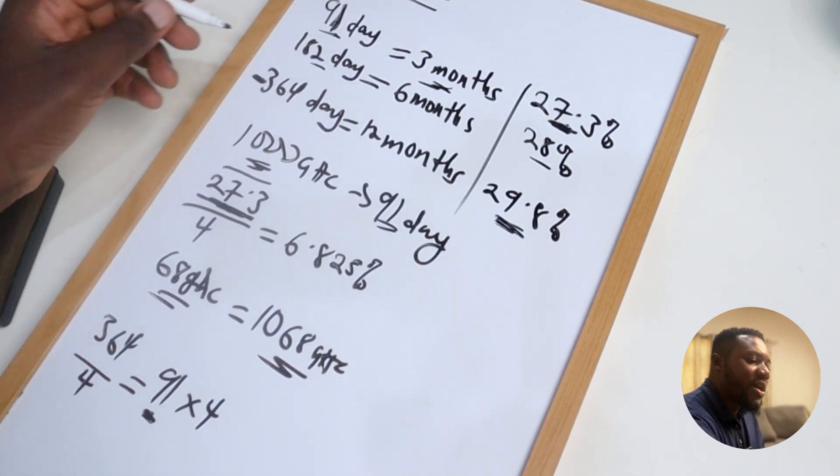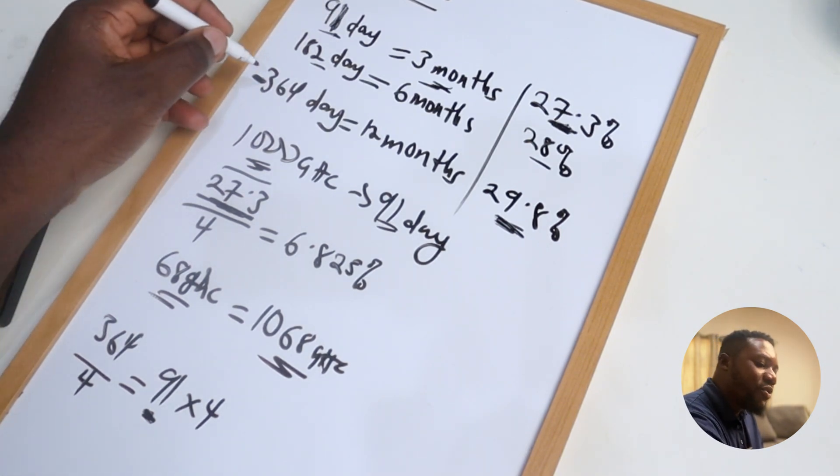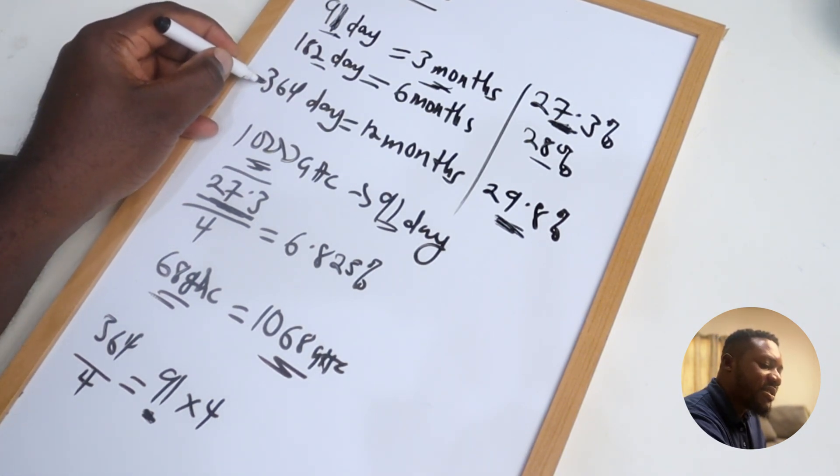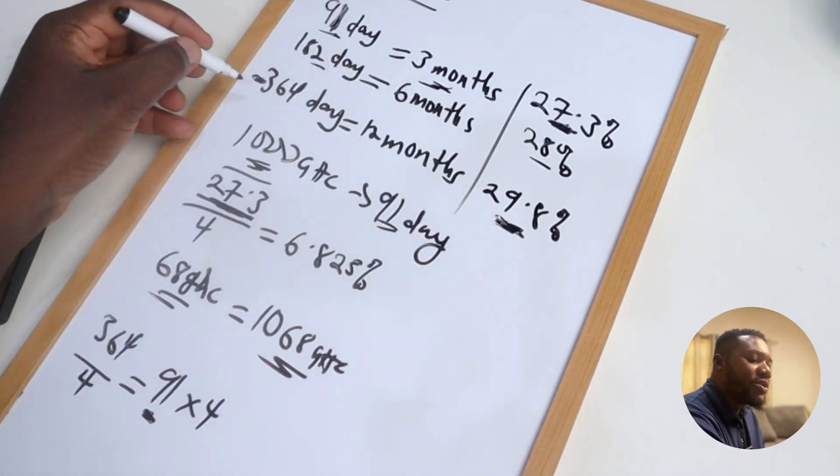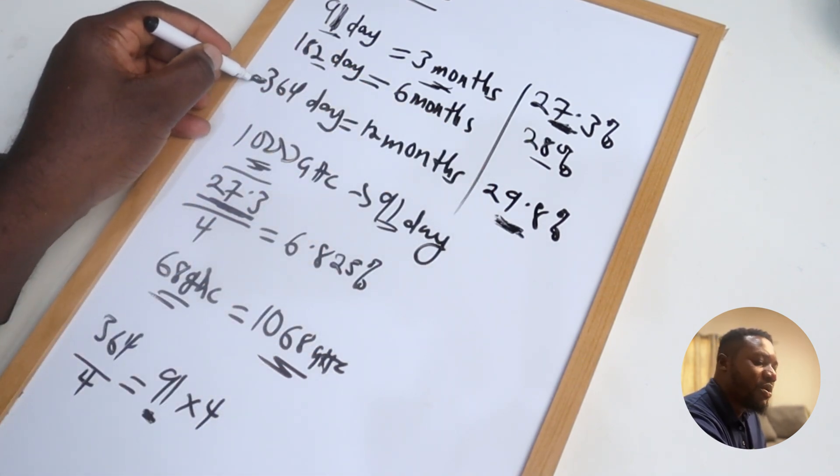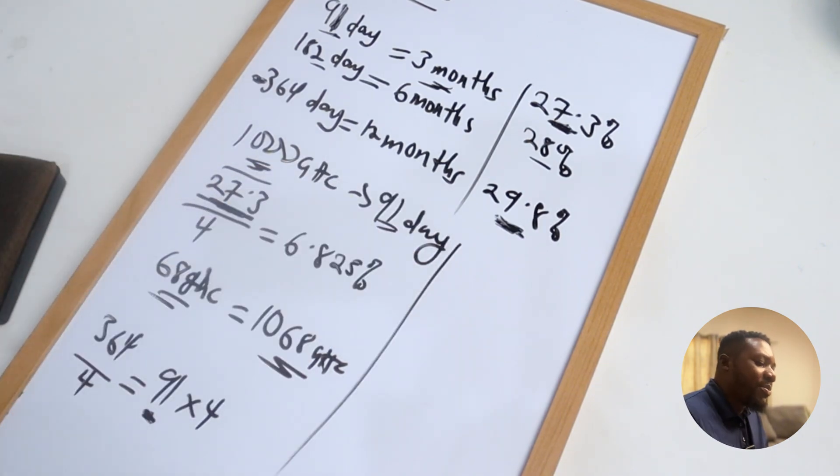However, if you choose to go with a 364 day bill which the interest is higher, you're not going to get your money anytime soon. You're going to get it at the end of the year.